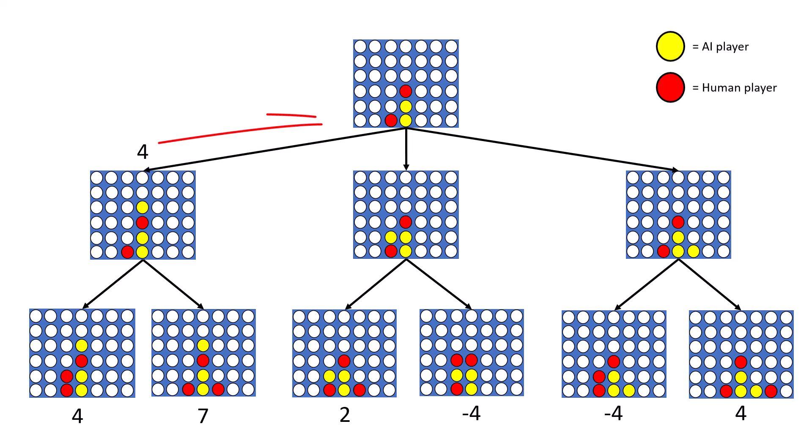Then it will go back up the tree and explore the middle of the tree all the way to the bottom. The human or minimizing player would choose the smaller of the two numbers again, which in this case is negative 4. Minimax will do this for the right side of the tree as well. Then go back to the top of this tree. At this level, it is the AI player or maximizing player's turn. It has the option between 4, negative 4, and negative 4. And because the AI player is always trying to maximize the score, it chooses 4.